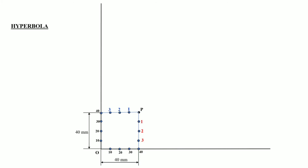I have named these points as 1, 2, 3 on both lines. Now we will be extending this horizontal line and vertical line beyond point P as well. First of all, I am going to draw a line joining point 0 and point 1 on the vertical line and extend that line until it crosses the horizontal line.